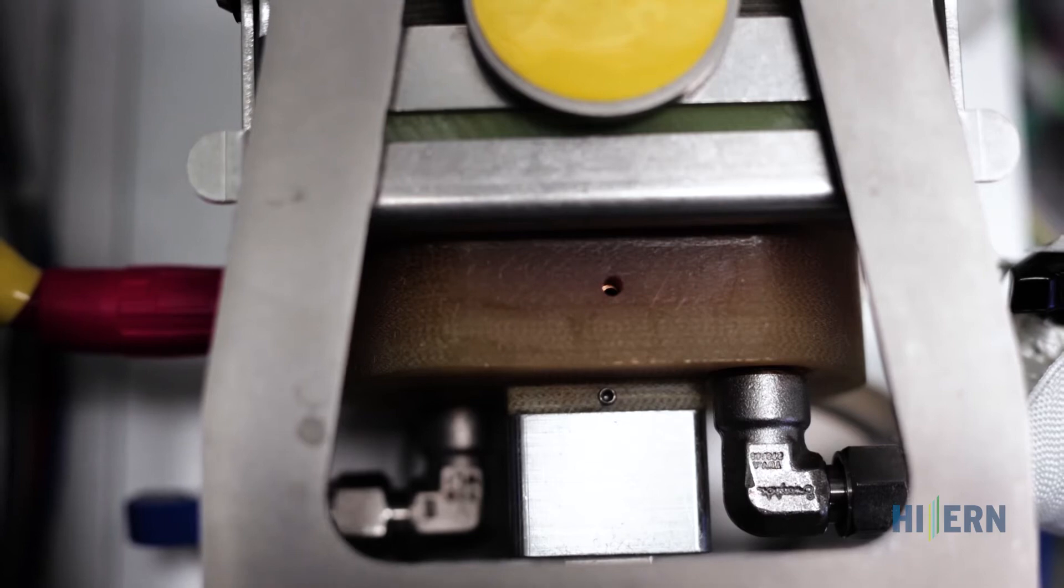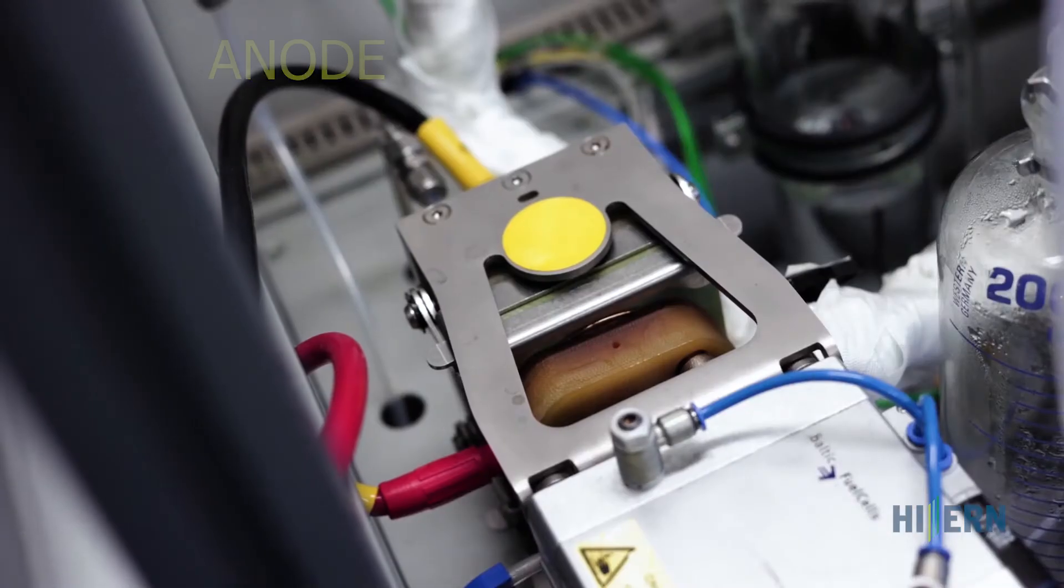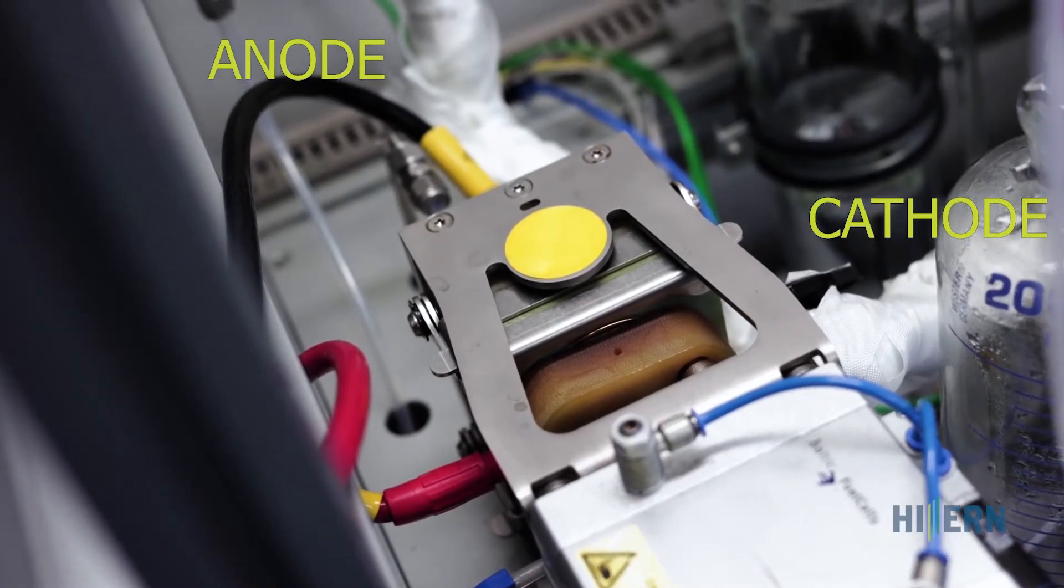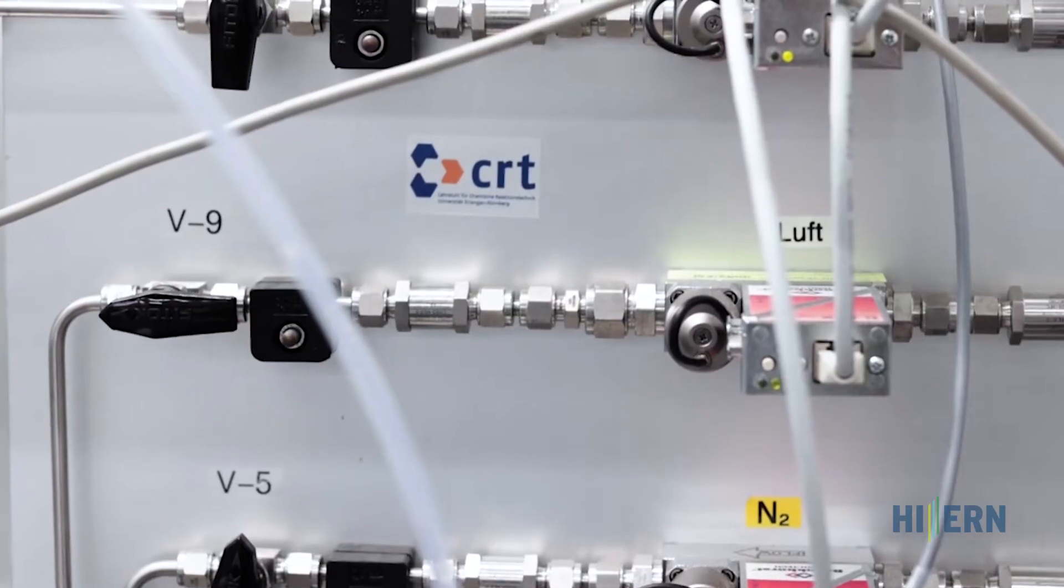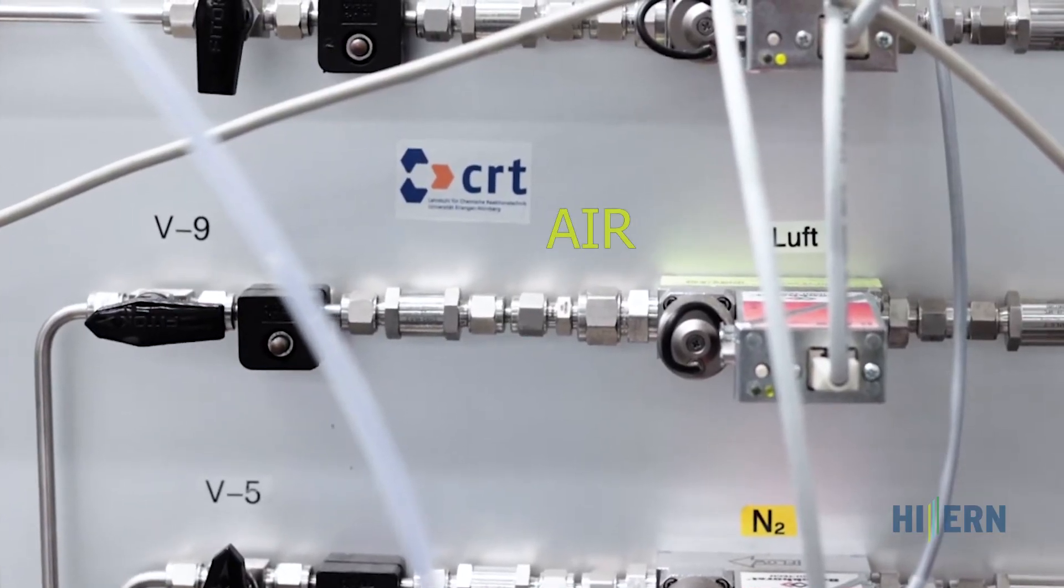The cell is flowed through from two sides, anode and cathode. On the cathode side, humidified air comes into the cell.